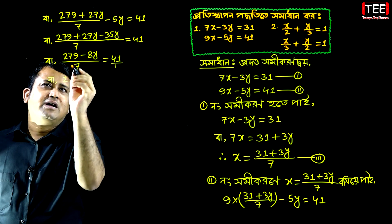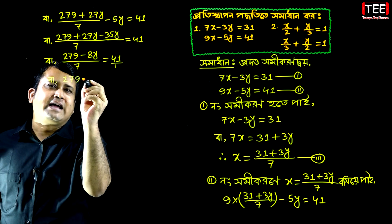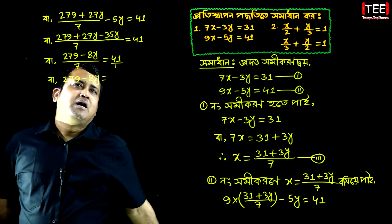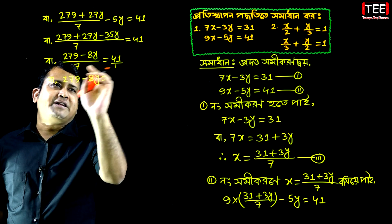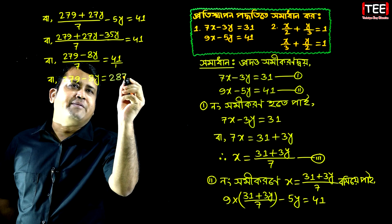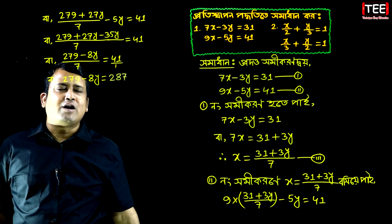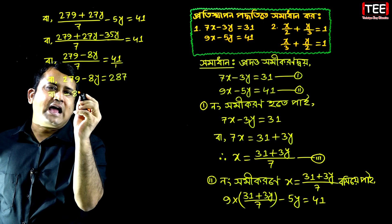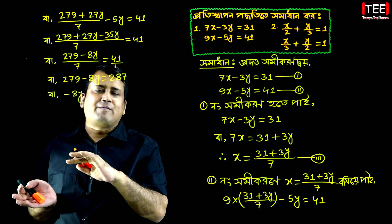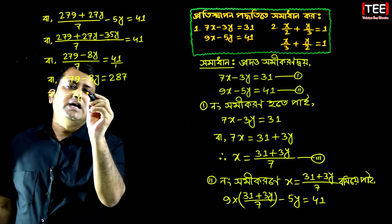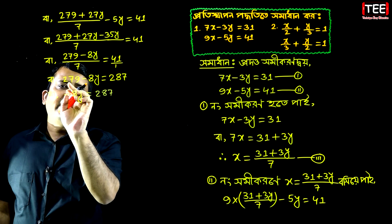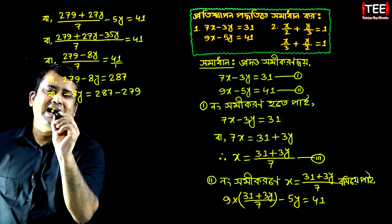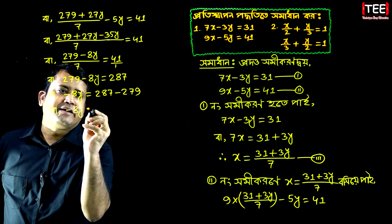It is equal to 279 minus 8y. So, 7 into 41 is equal to 287. Pi bar minus 8y — we have to say 287 plus minus 279, bar minus 8y is equal to...